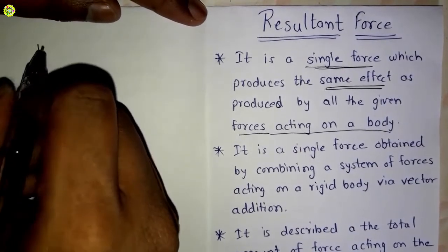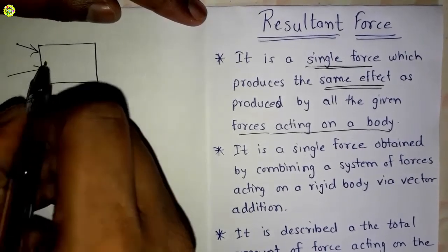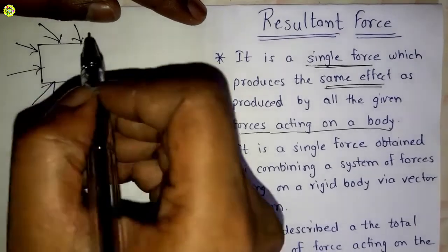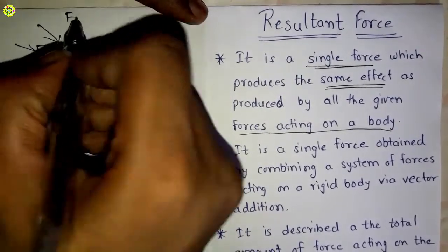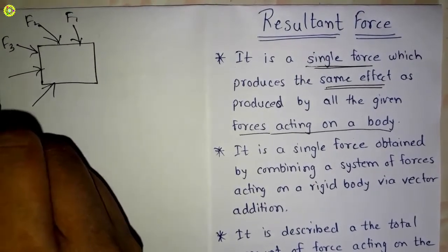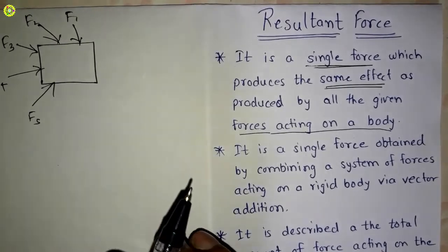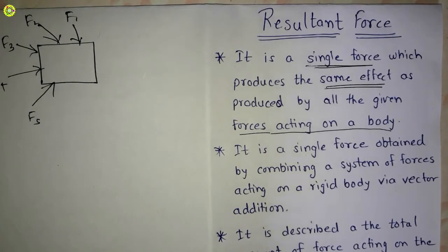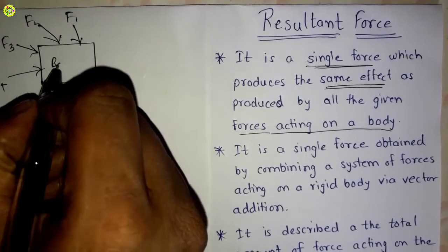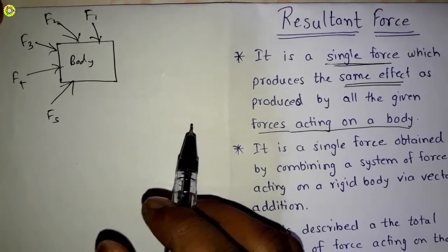Suppose this is a body. On this body there are a number of forces acting — f1, f2, f3, f4, and f5. Because of these forces, some effects will be produced on this body, such as deformation, motion, or retardation.